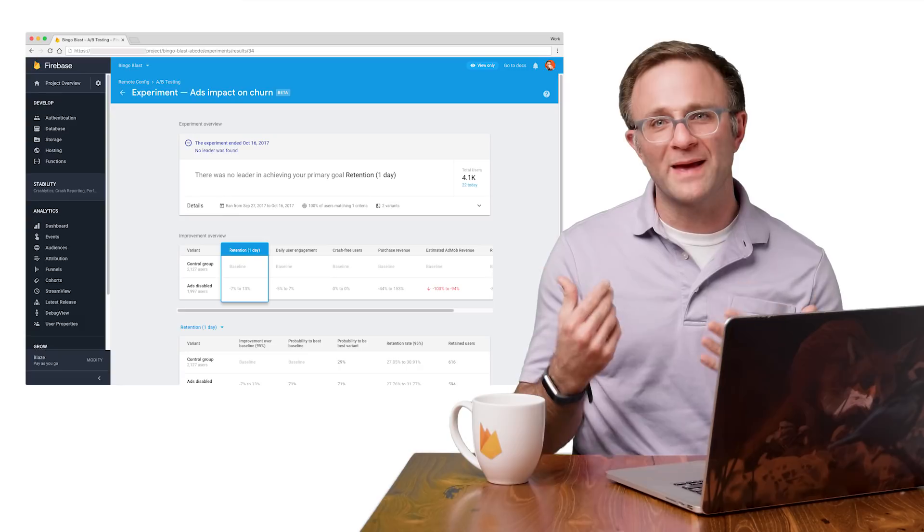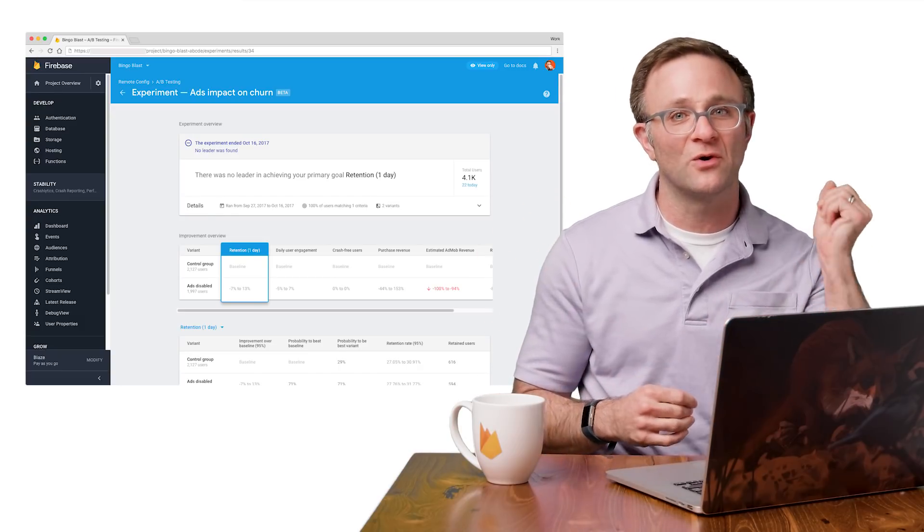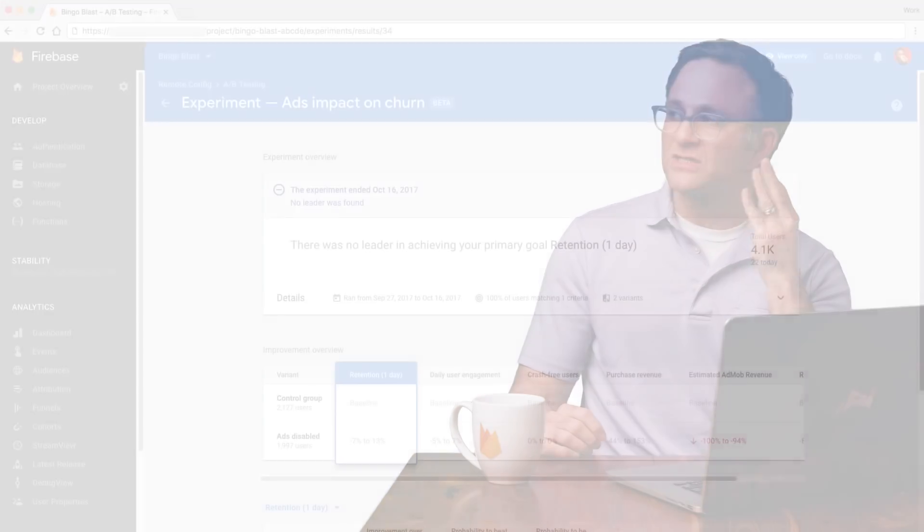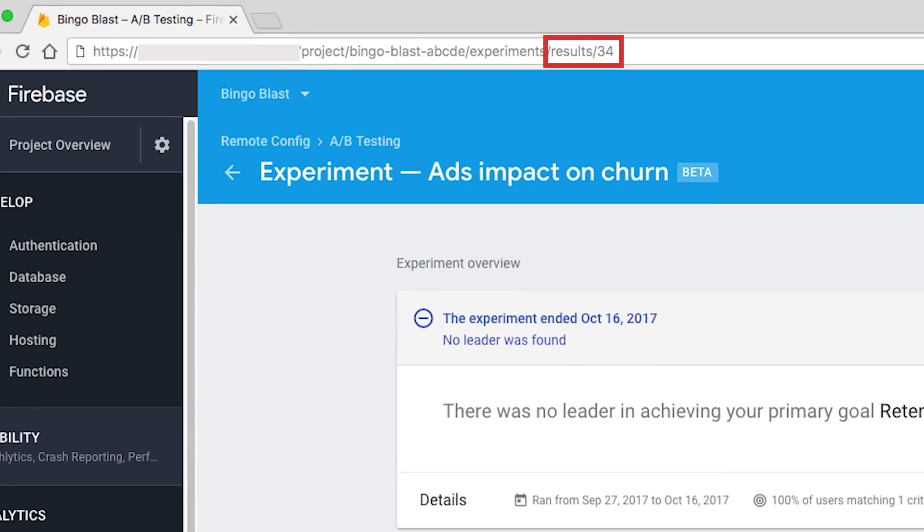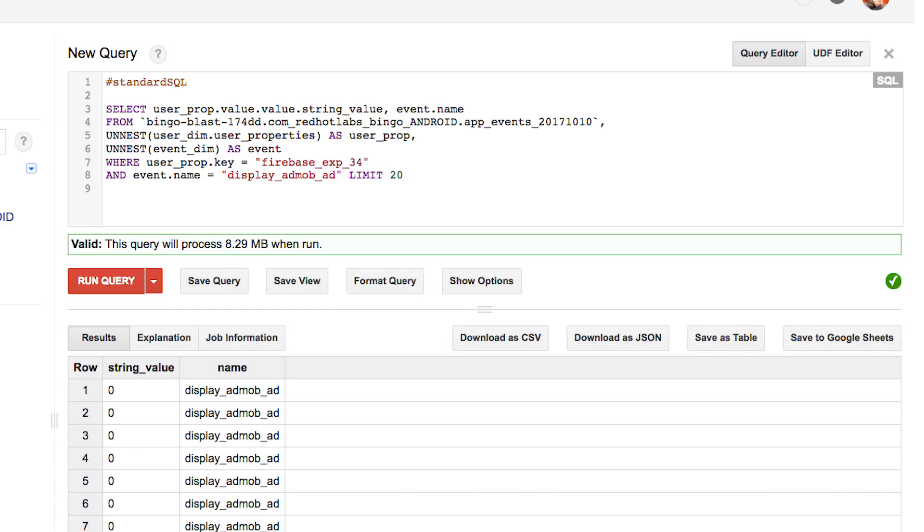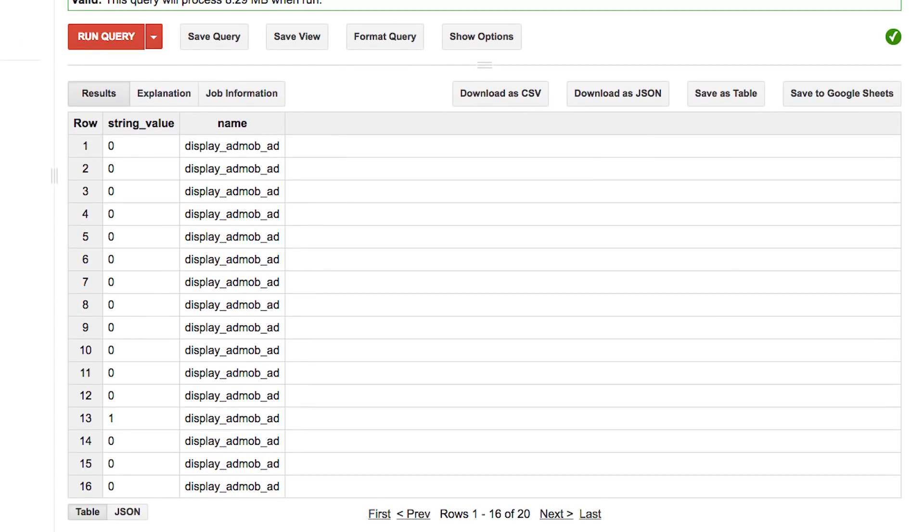So for example, let me go back and take a look at that bingo blast experiment from a few videos ago where they disabled ads. So I can see here at the top in this URL that it was experiment number 34. So I can query this experiment in BigQuery. Like, let's maybe run a simple query here where we see how many display AdMob ad events were recorded for each group in my experiment. So what I can do here is grab the Firebase underscore exp underscore 34 user property and the event name. And sure enough, it seems like I'm getting mostly display AdMob events when our user is in variant 0, which is our control group.